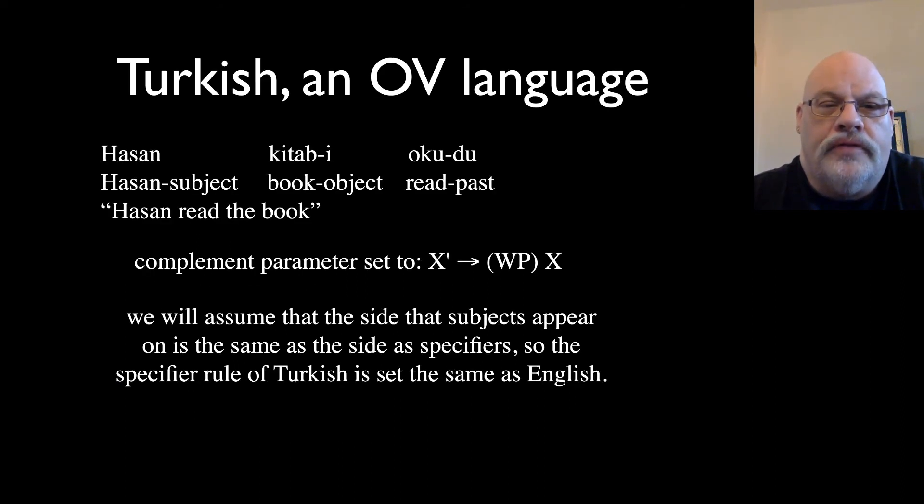Let's look at another language. So here's Turkish, which is an OV language. So one thing we can note here is that the object comes before the verb. And we know that objects are typical complements. So on the basis of this sentence alone,